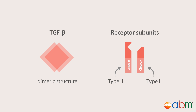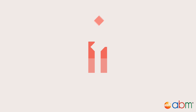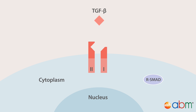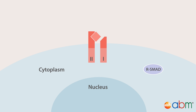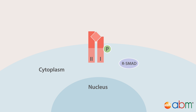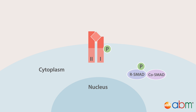Within the family, complex interaction remains the same. Following ligand binding, the type 2 receptor phosphorylates and activates the type 1 receptor, which then activates a SMAD-dependent signaling pathway that regulates gene transcription.